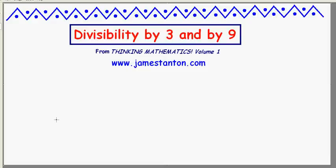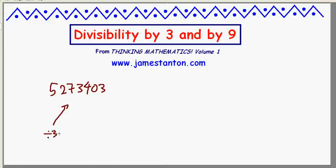Welcome! There's a rule out there for divisibility by 3. For example, if I look at the number 5,273,403 and I'm asking if that's divisible by 3, people would say add up the digits and check if the digits are divisible by 3. 5 plus 2 is 7, plus 7 is 14, plus 3 is 17, plus 4 is 21, plus 0 is 21, plus 3 is 24. 24 is a multiple of 3, so apparently that means this number is divisible by 3.